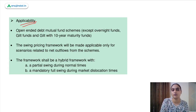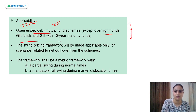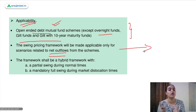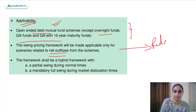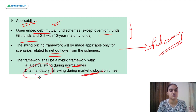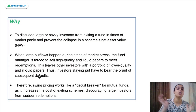Regarding the applicability of the swing pricing framework: it applies only to open-ended debt mutual funds, excluding overnight funds and gilt funds, and only for scenarios related to net outflows from schemes. Partial swing will be applicable during normal times, but if it is a situation of market dislocation — when the market is in some kind of stressful situation — then this pricing mechanism must be mandatorily followed.